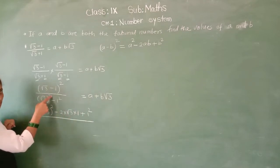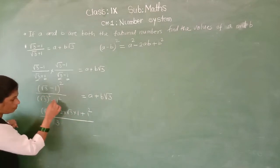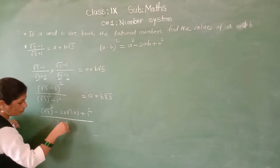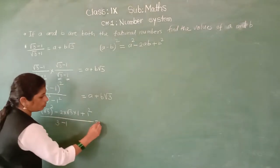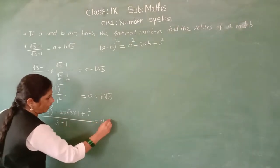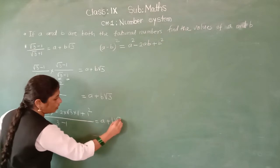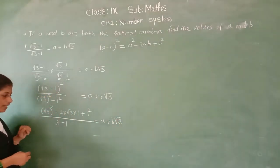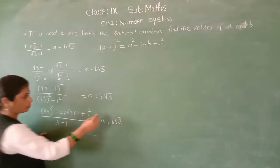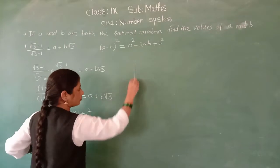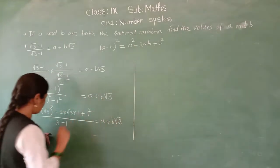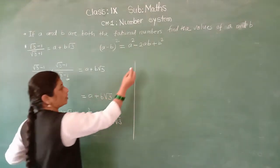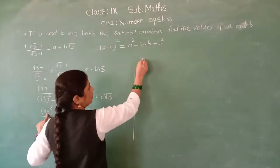Upon here: root 3 squared is what? 3. Minus 1 squared is what? 1. Equals A plus B root 3. Now here, what is root 3 squared? Root 3 squared is 3.